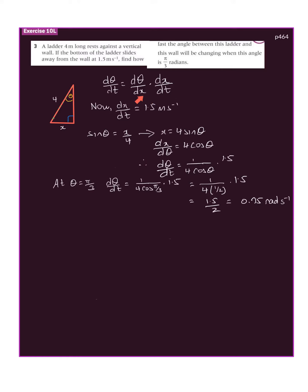We set up our equation here. The question asks to find how fast the angle between the ladder and the wall will be changing. So that's dθ/dt. They gave us dx/dt because that was the ladder sliding away from the wall at 1.5 meters per second. We know that.